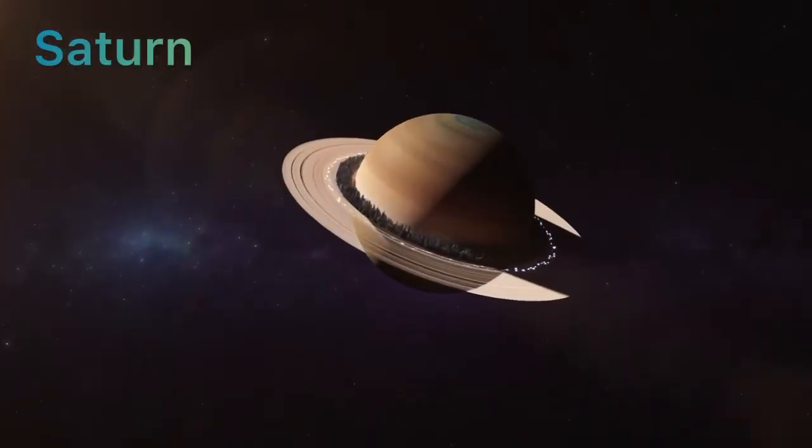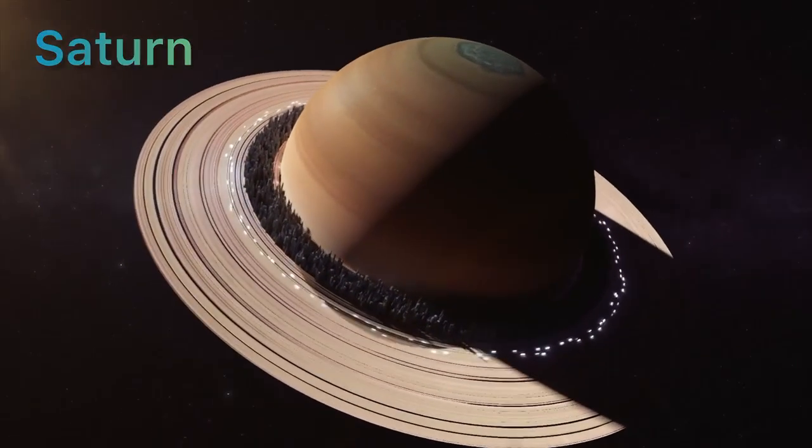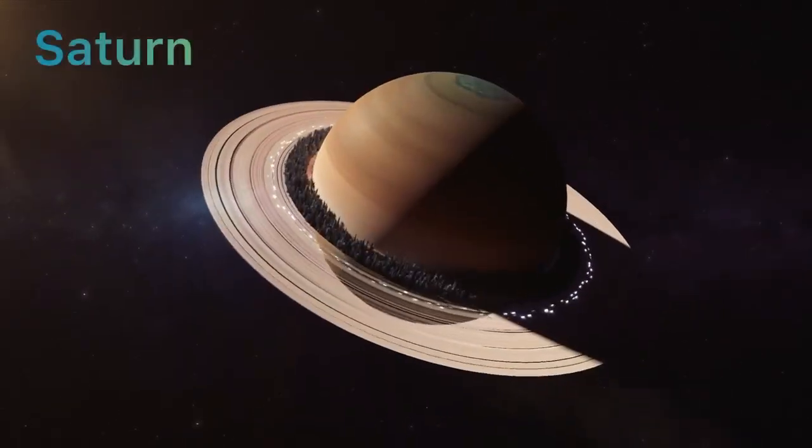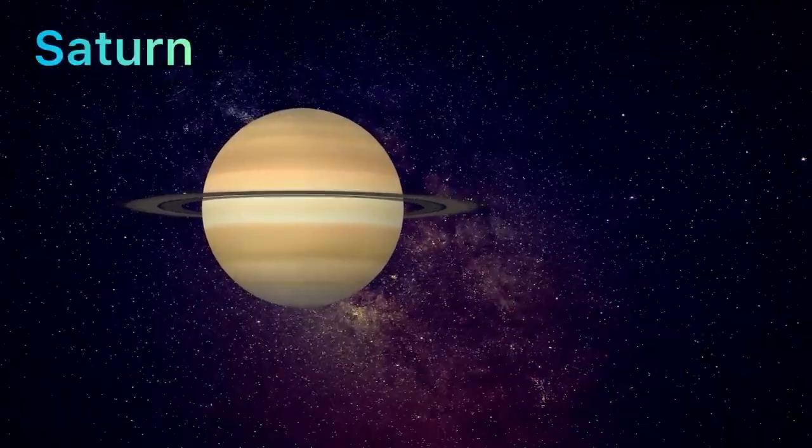Saturn's rings have gaps and divisions like highways in space. Some parts of the rings spin faster than others. Wow!